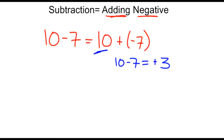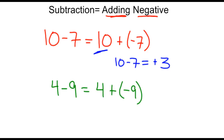Now let's say we had the problem 4 minus 9. Well, that's the same thing as saying 4 plus a negative 9. So we're adding two numbers with different signs, so we subtract the two numbers. 9 minus 4 is 5, and then the 9 is the larger of the two numbers and it's negative, so our answer would also be negative.